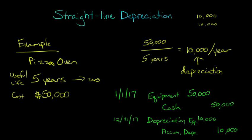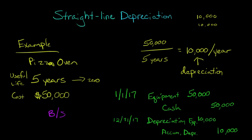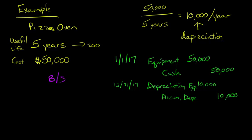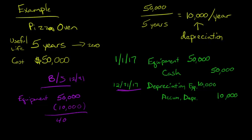Now, accumulated depreciation is a contra asset. So if we look at the balance sheet — here's our mini balance sheet — we have this equipment. Let's assume this was our only PP&E. As of December 31st, that equipment is recorded at cost of $50,000. But then we subtract out the accumulated depreciation of $10,000, so we really have $40,000.